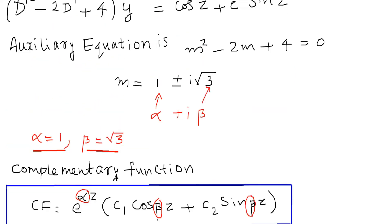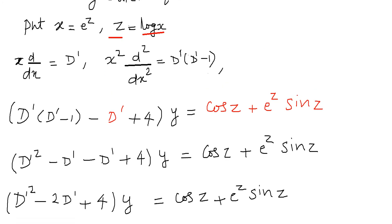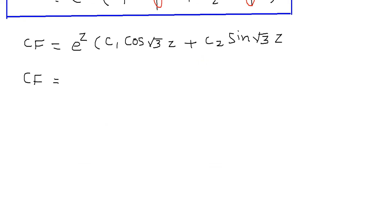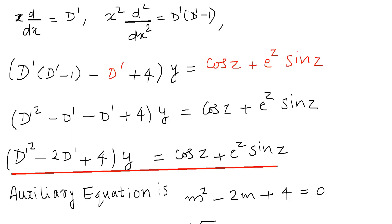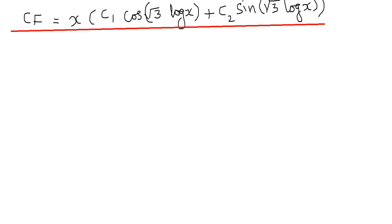Now we convert the complementary function from z to x terms. Since x = e^z and z = log x, e^z becomes x, so the complementary function becomes x · (c₁ cos(√3·log x) + c₂ sin(√3·log x)). Now we have to find the particular integral of D'² − 2D' + 4 into y = cos z + e^z·sin z. The particular integral PI₁ = 1/(D'² − 2D' + 4) · cos z.